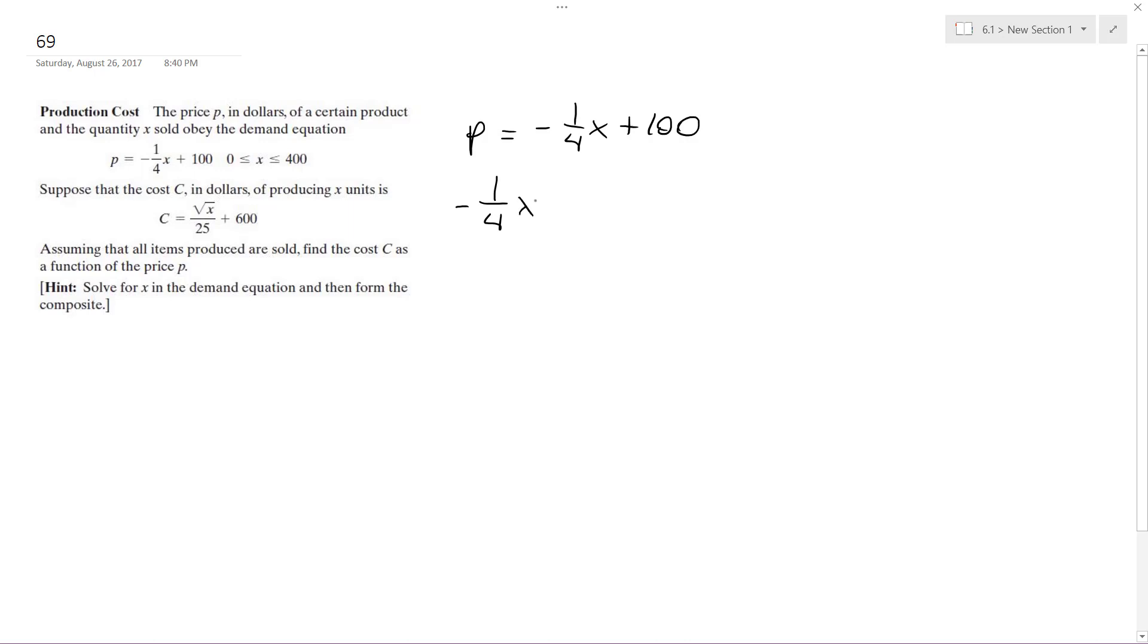So -1/4x = p - 100, then x equals... not x... let me just do this. Negative one-fourth times p minus 100 times negative one-fourth. So I end up with x = -p/4 + 25. I'm going to plug this in for c.